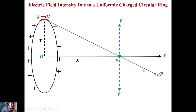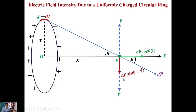This angle is theta, and this angle also will be theta. Obviously DE has two components: one is the horizontal component along the positive x-axis direction, which will be DE cos θ i-cap, and another is the vertical component along the negative y-axis direction, which will be DE sin θ (−j-cap).